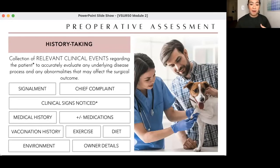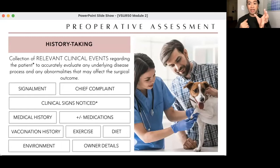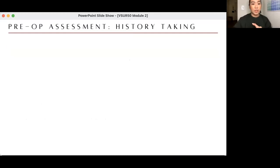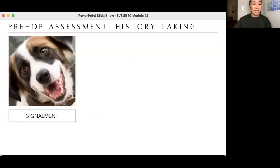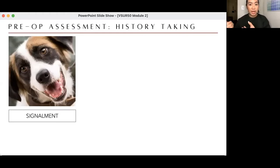In history taking, it doesn't just concern your patient — you also ask things that concern the client. Especially when companion animals are involved, the behavior and routine of the client is very much tied to the routine of the dog or cat they care for.